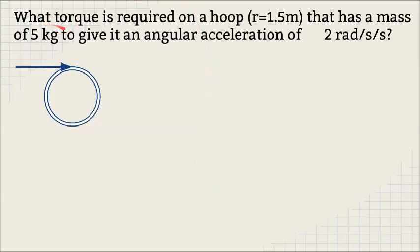This first example is: what torque is required on a hoop that has a radius of 1.5 meters and a mass of five kilograms to give it an angular acceleration of two radians per second squared? So we have to apply torque. A torque is a combination of the force times the radius.